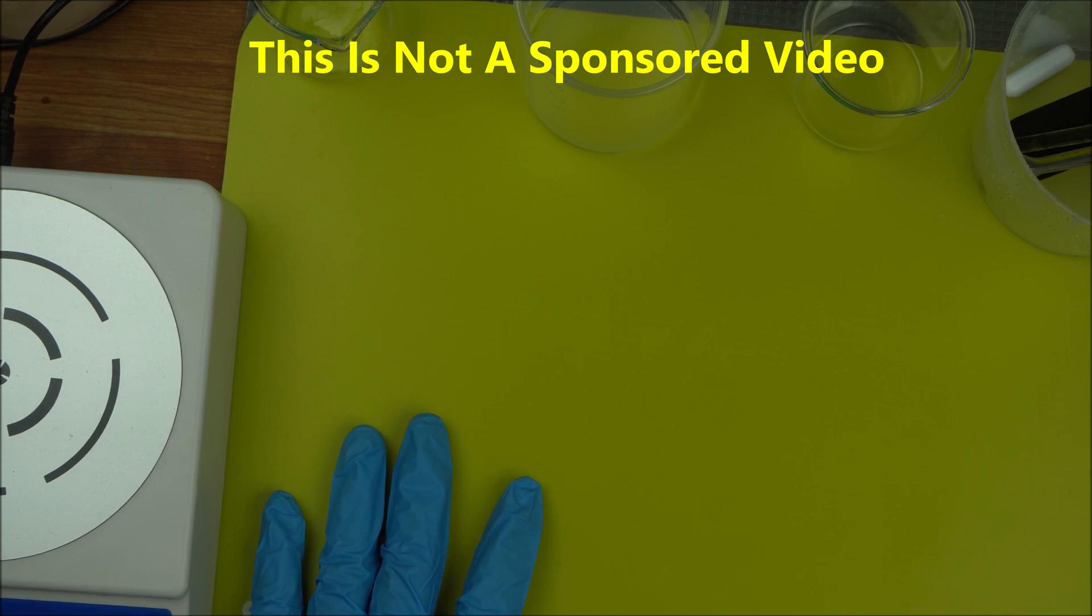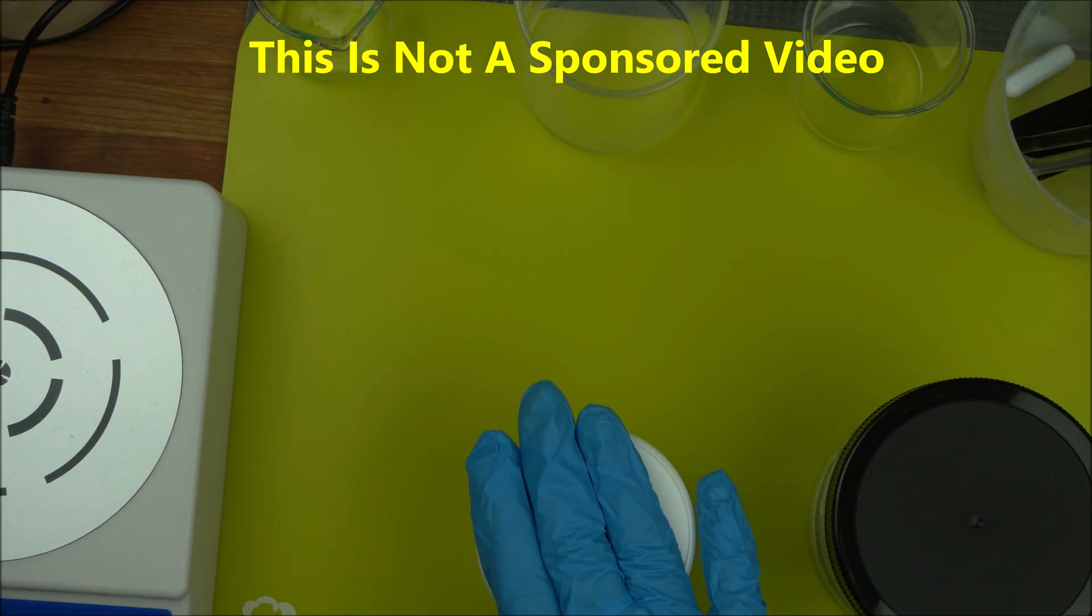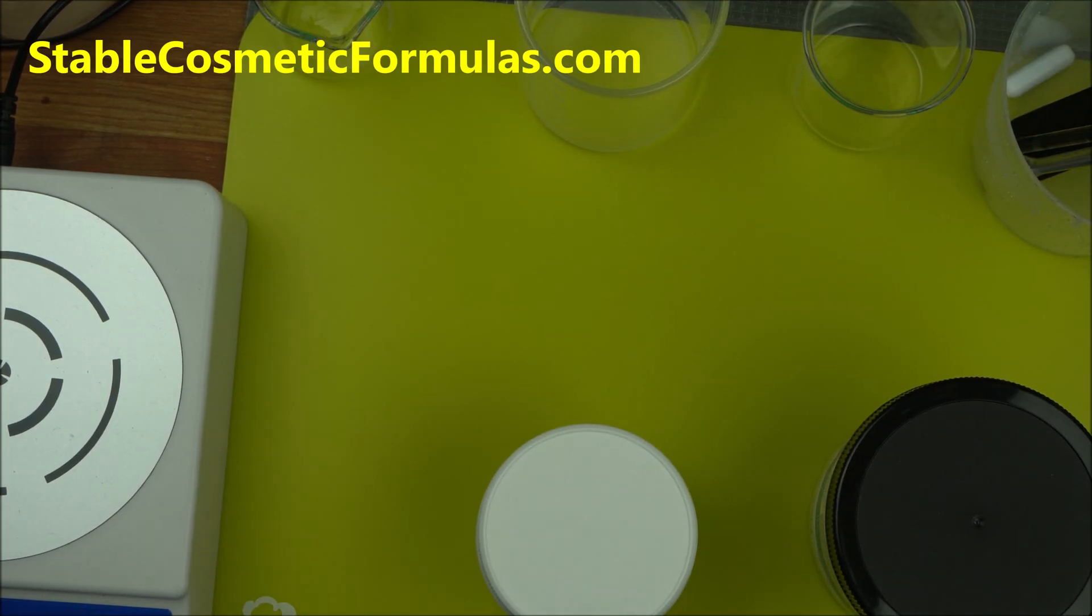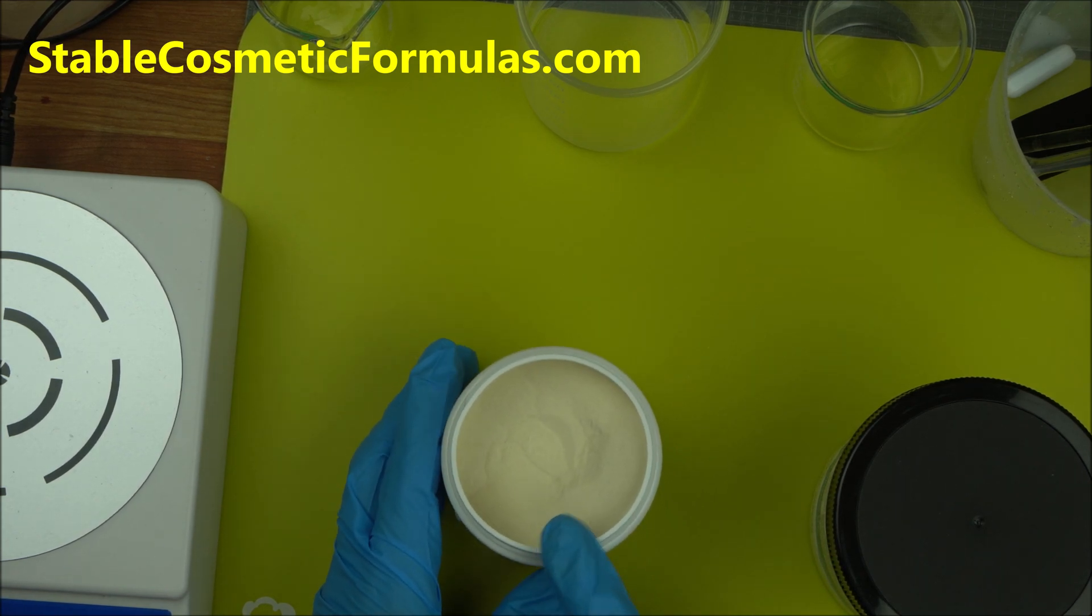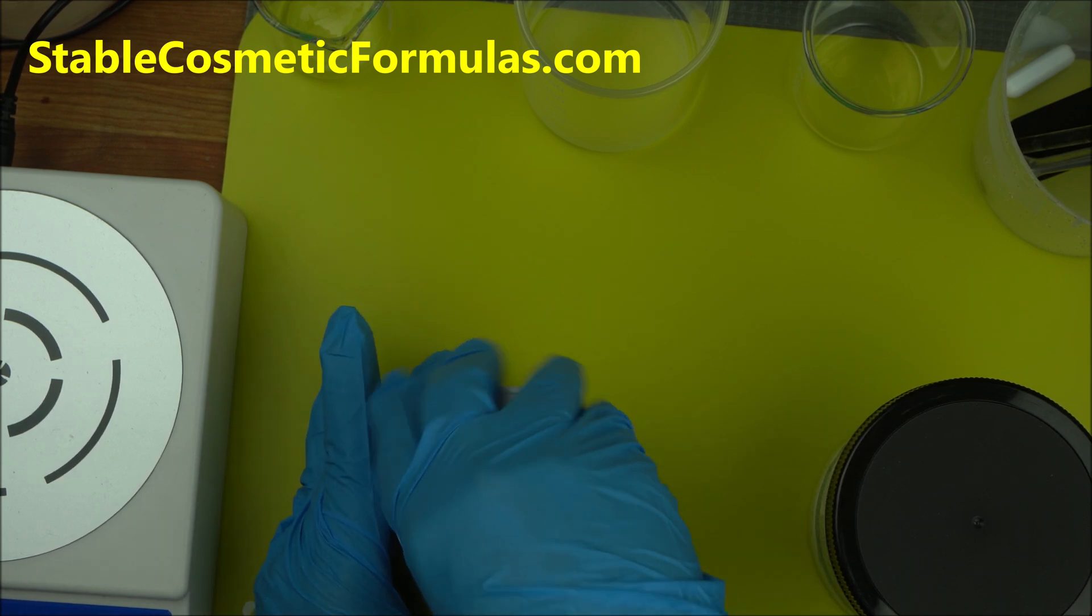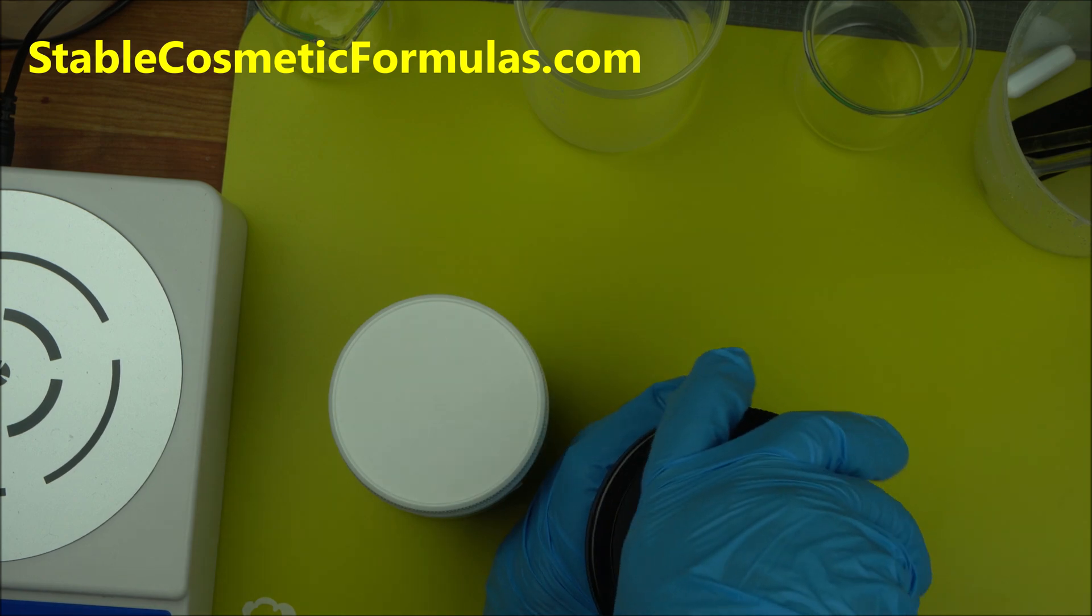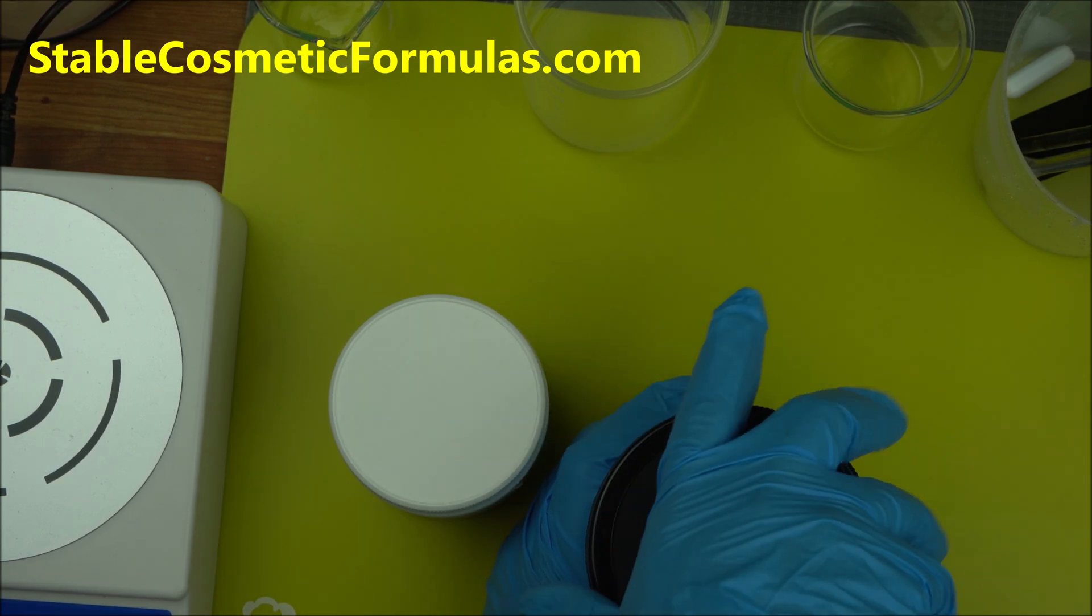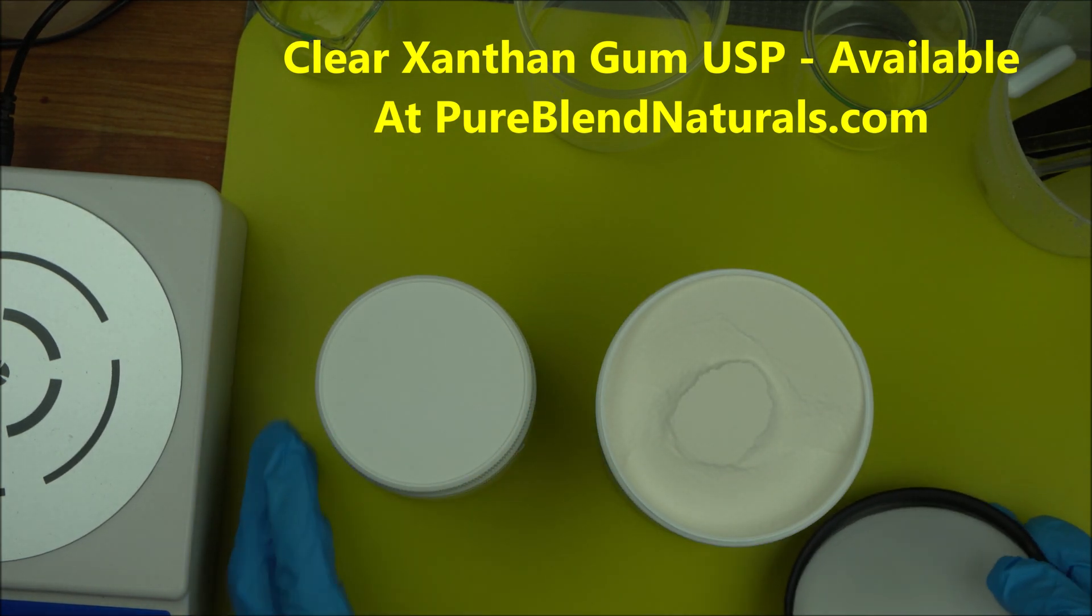Welcome everybody to the channel. In this video I'm going to talk to you about the best grade of xanthan gum for cosmetic formulation. If you have been making your beauty products with this type of xanthan grade, you are using the wrong grade. The right grade of xanthan gum for cosmetic formulation is the USP version, called clear xanthan gum USP.